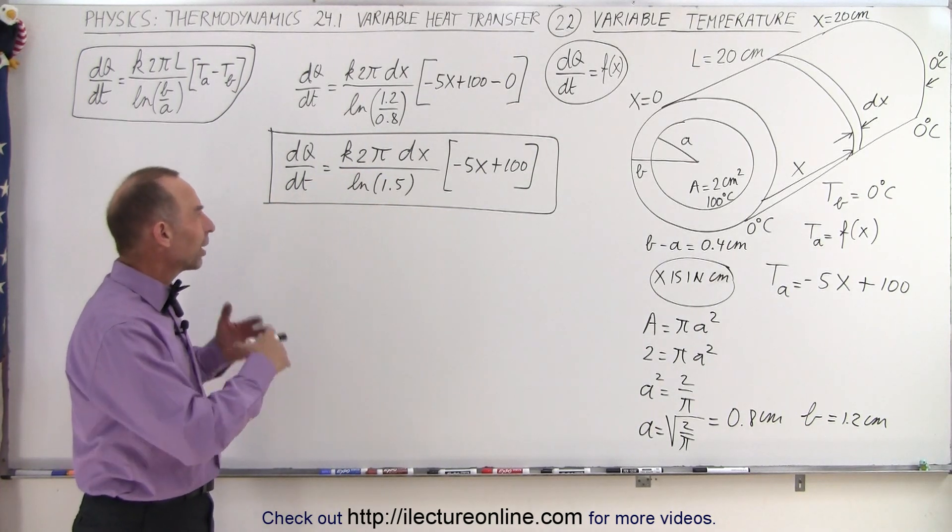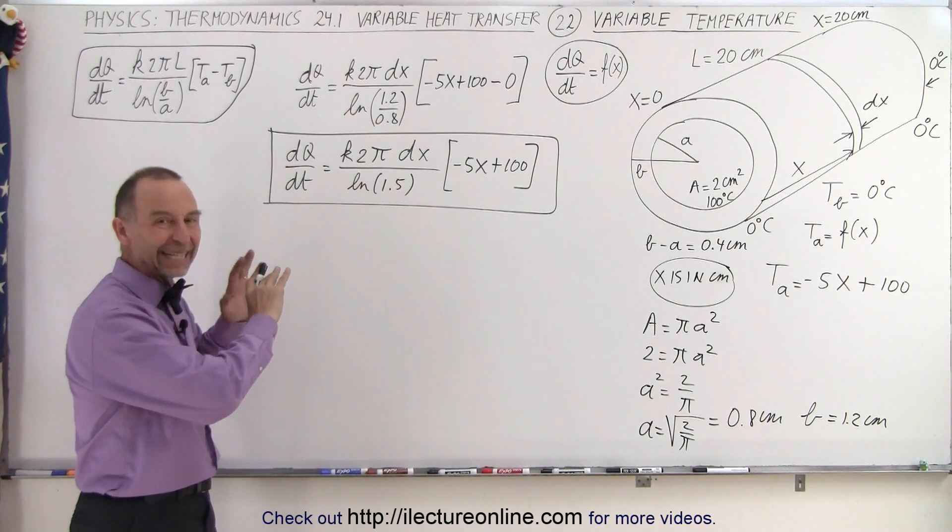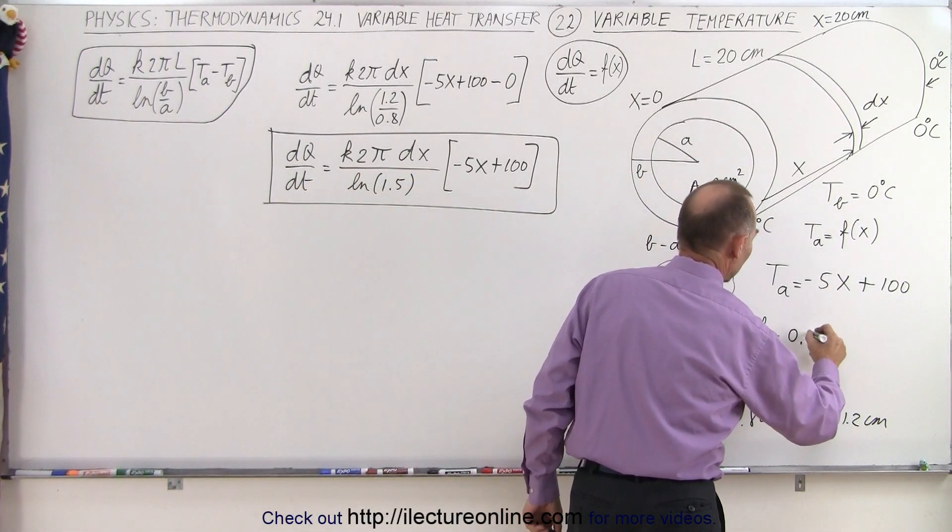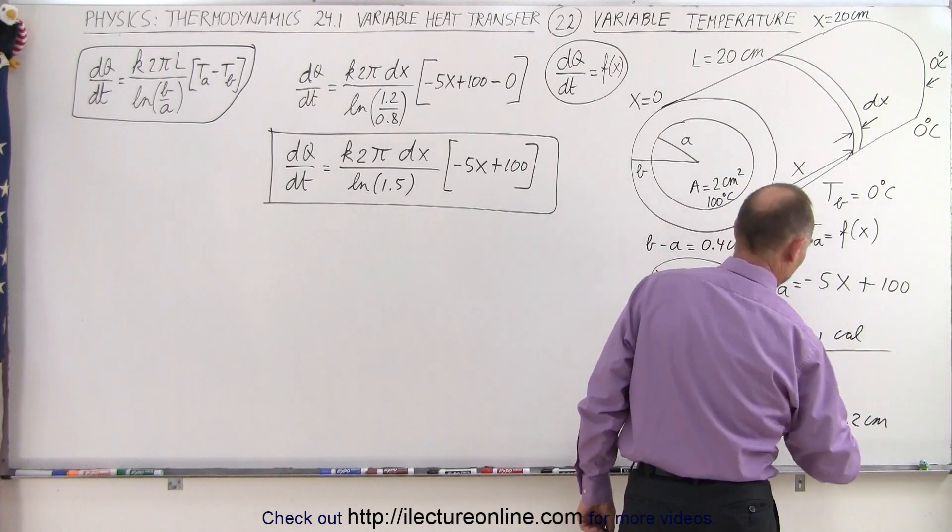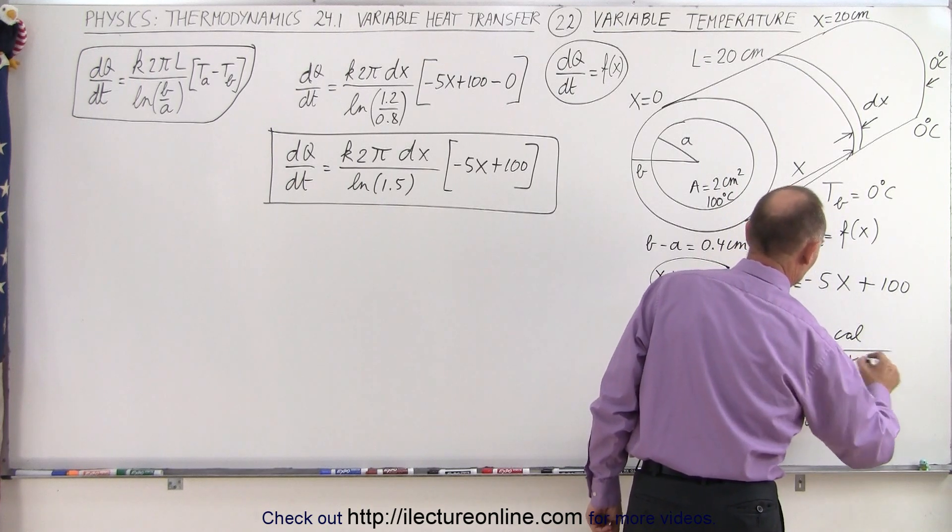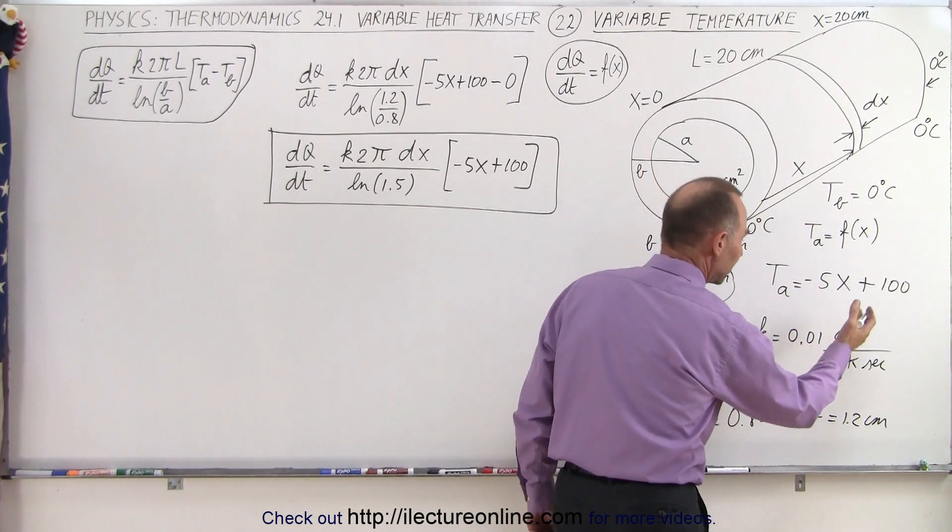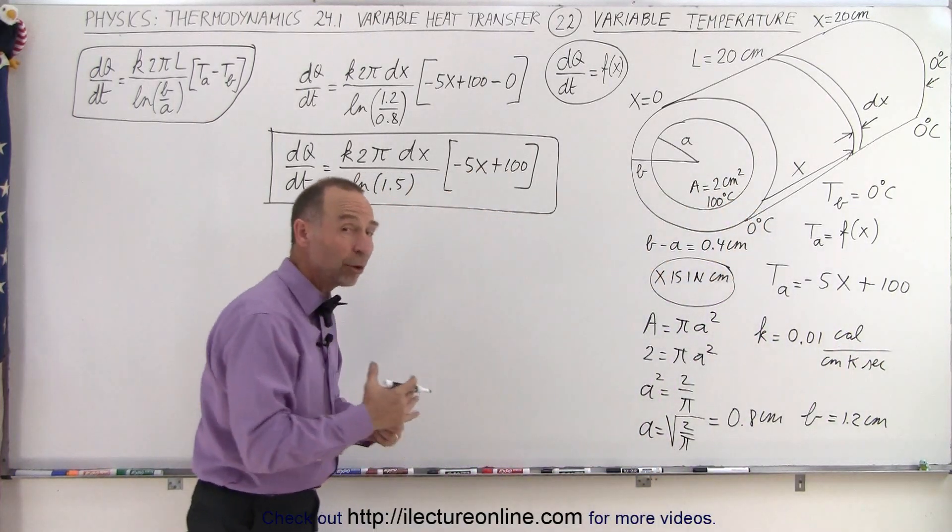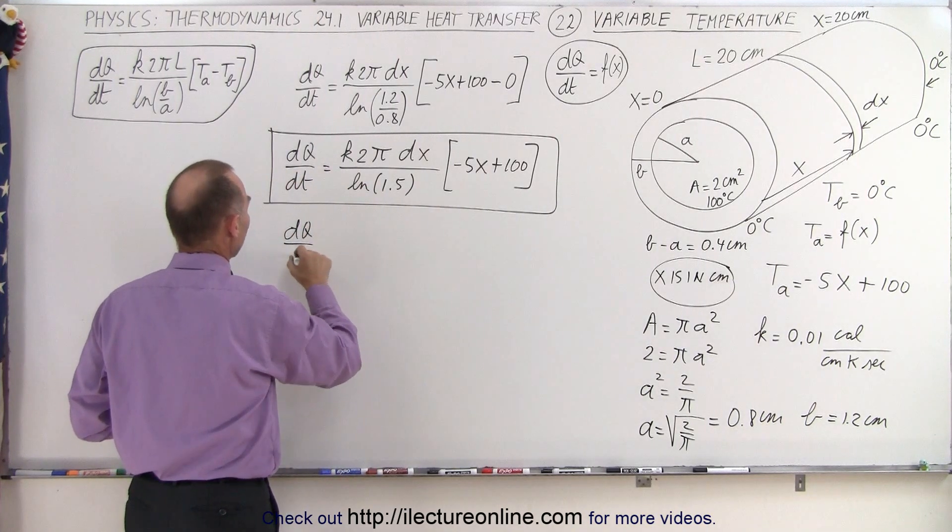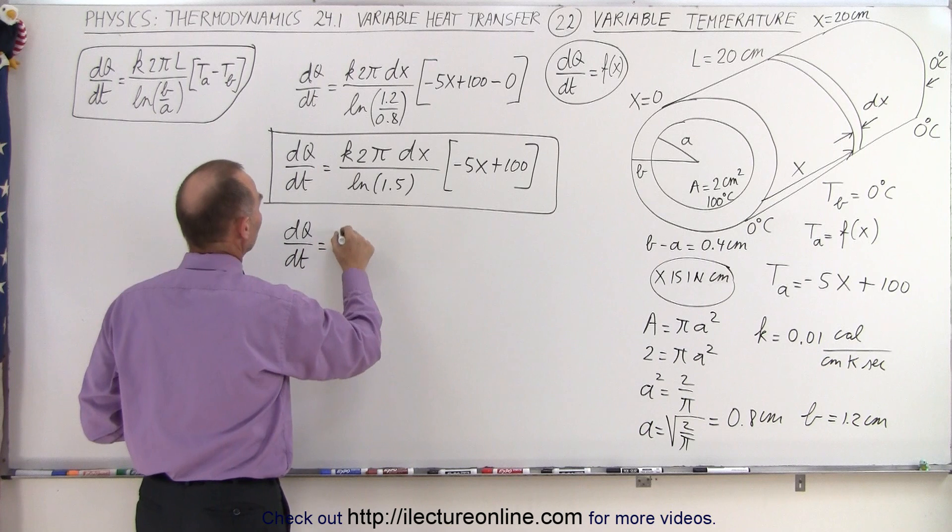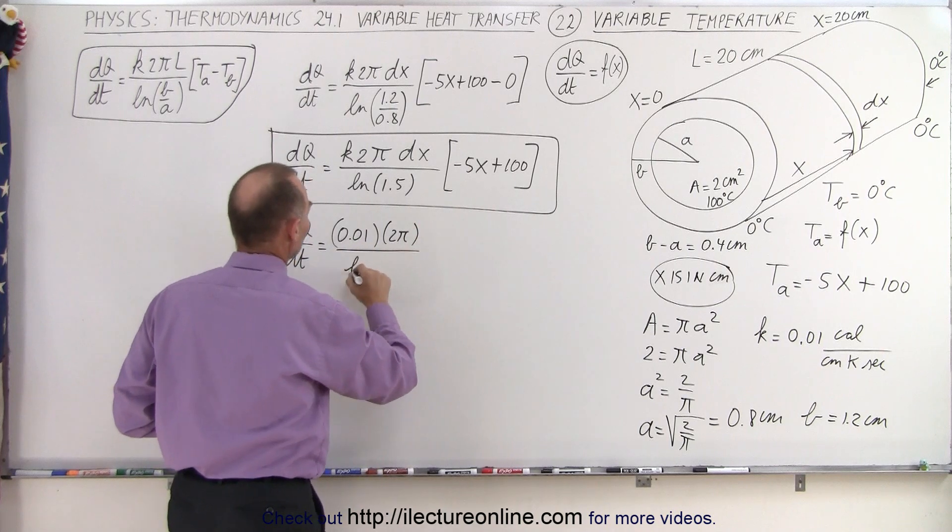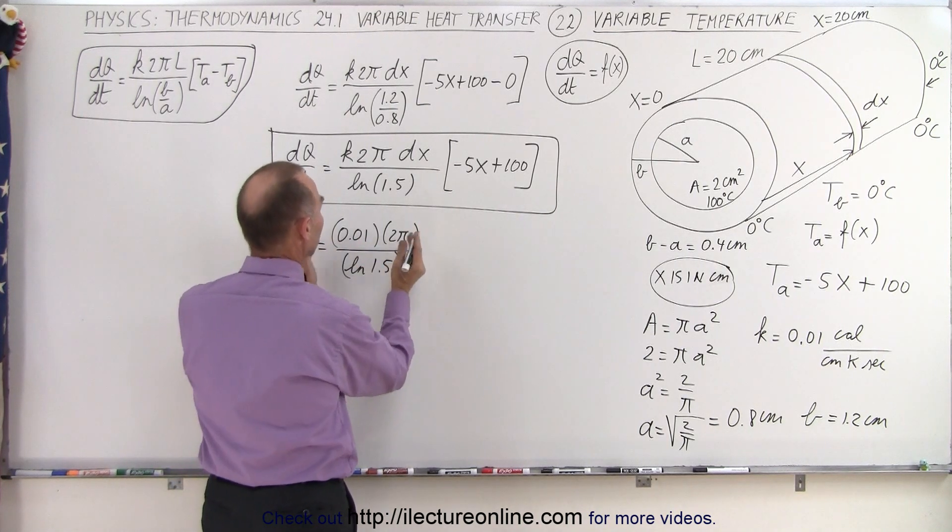I thought that it might be a good idea to go ahead and plug in a K and get maybe a little bit cleaner of an equation here. So let's say that we have K is equal to 0.01 calories per centimeter per Kelvin per second. So K would then be expressed in terms of calories per centimeter per Kelvin per second, the amount of heat flow in terms of calories, and let's plug that in here to see what we would get.